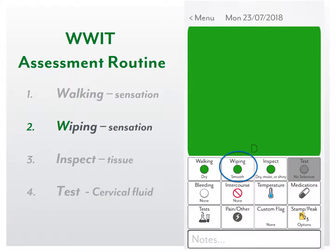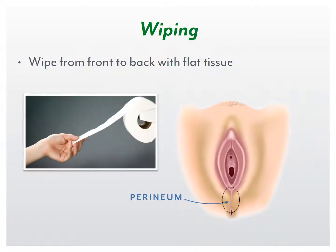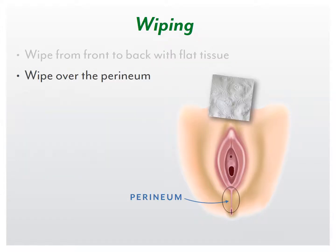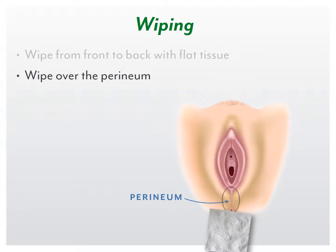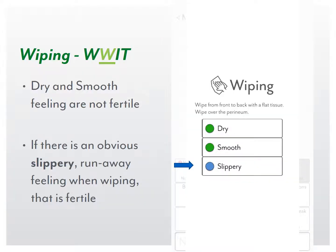Wiping. Click on the second tile on the app. When you routinely use the toilet, wipe before and after urination or a bowel movement. Wipe from front to back with a flat tissue. Make sure to wipe over the perineum — the area of skin below the vagina — as that is where sensation of wiping is felt. Dry and smooth feeling are not fertile. If there is an obvious slippery runaway feeling when wiping, that is fertile and recorded with a blue stamp.